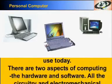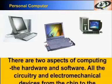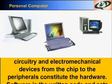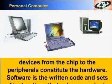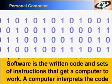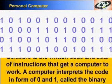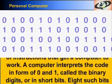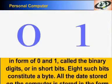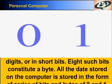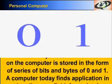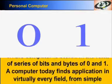There are basically two aspects of computing: the hardware and software. All the circuitry and electromechanical devices from the chip to the peripherals constitute the hardware. On the other hand, the software is the written code and sets of instructions that gets the computer to do any work. A computer interprets the code in form of zeros and ones called the binary digits, or in short, bits. Eight such bits constitute a byte. All the data stored on the computer is stored in the form of a series of bits and bytes of zeros and ones.